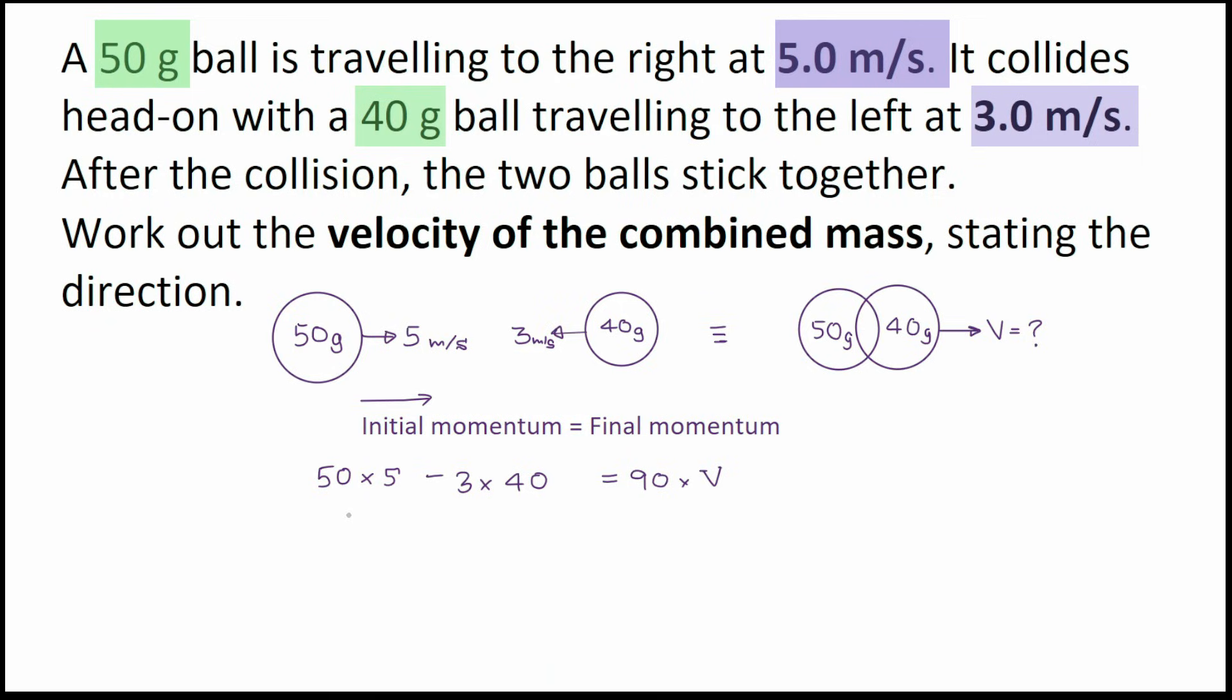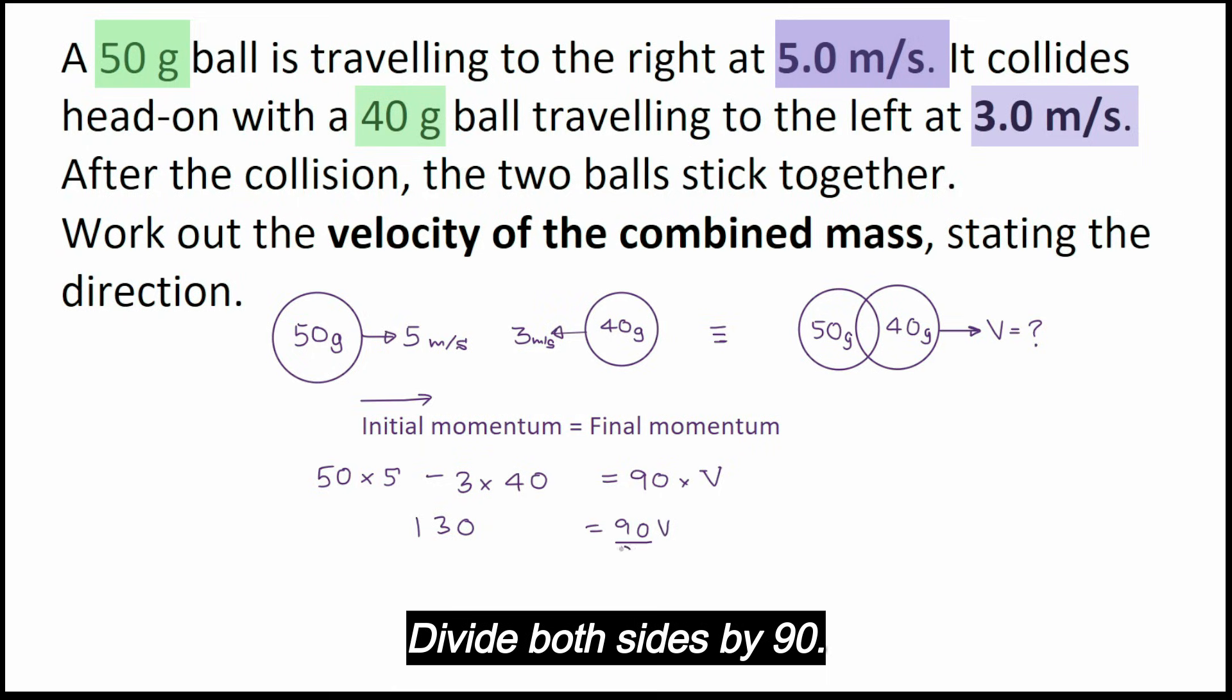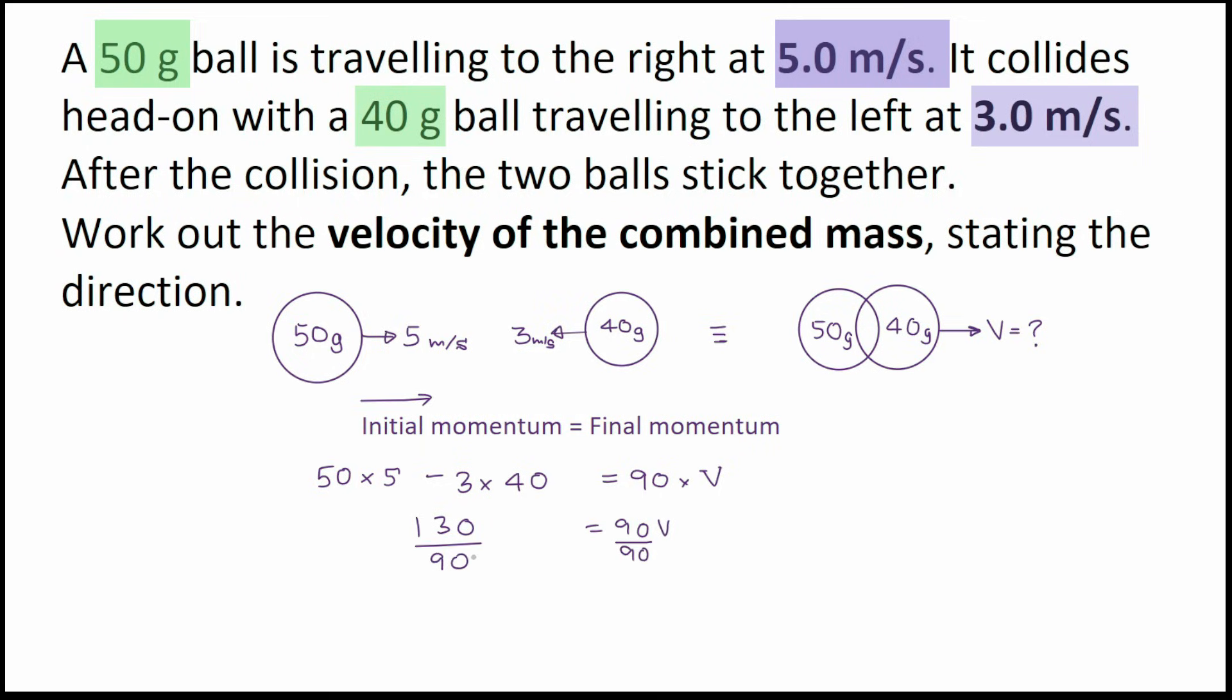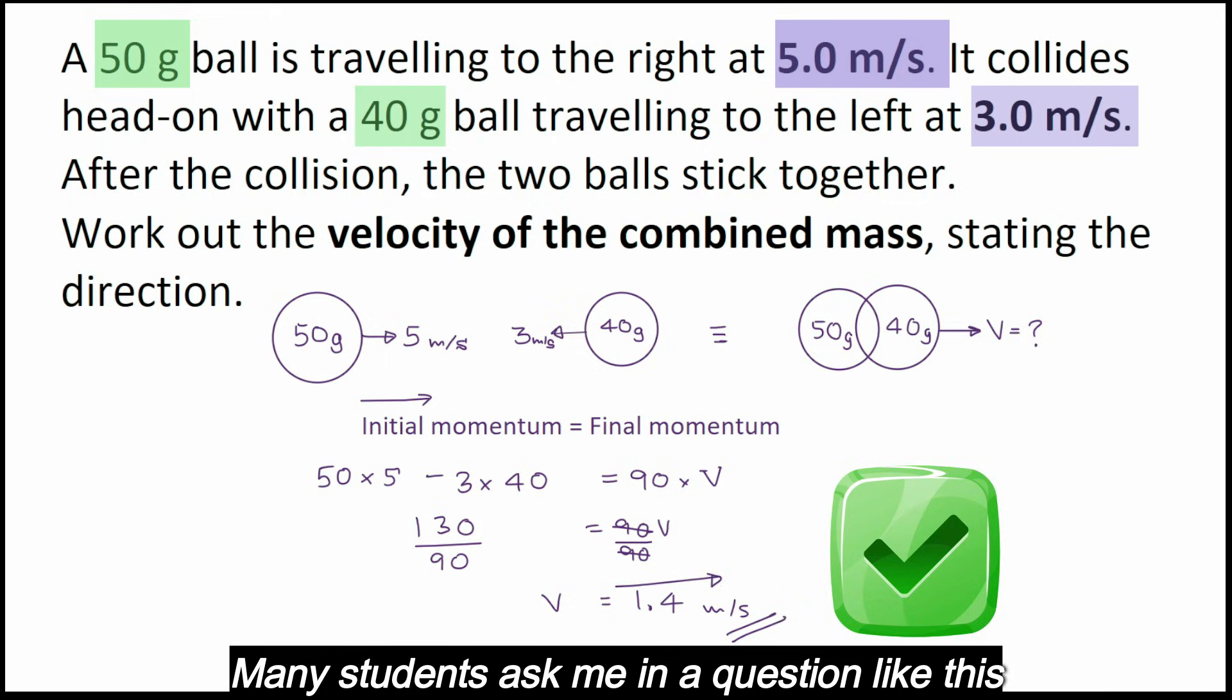Now let's simplify this one. 130 on the left is equal to 90v. Divide both sides by 90, and so the answer is 1.4 meters per second to the right.